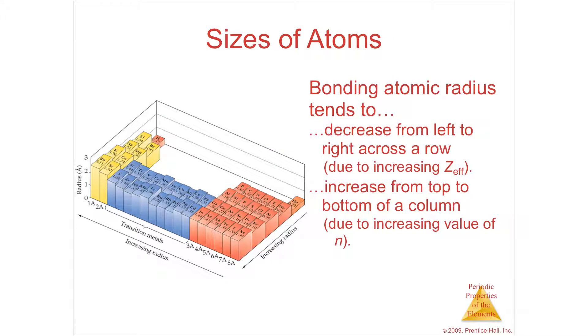The sizes of atoms change as you go down a group or across a row. If you go from hydrogen to lithium to sodium, potassium, rubidium, as you go down the column of the periodic table, you have more and more shells of electrons. These nested shells are increasing the size of that atom, which makes sense.